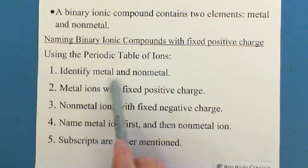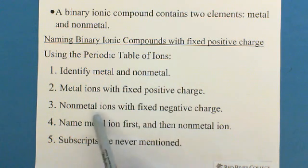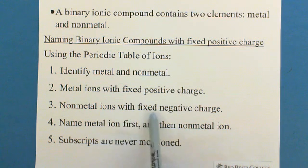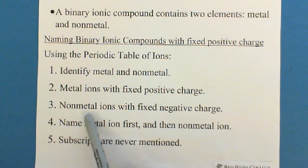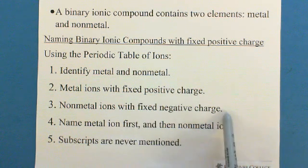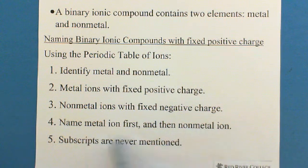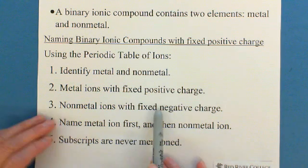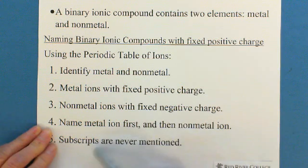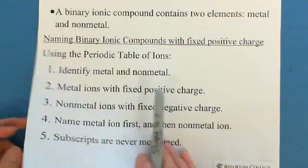So first identify metal and nonmetal. And also identify metal ions with fixed positive charge. And nonmetal, nonmetal ions with fixed negative charge. Mostly, in this case, as long as ionic compound, the nonmetal is fixed negative charge. So for naming them, just name metal ion first. And then naming nonmetal ion. And subscripts are never mentioned. The reason is because metal has fixed charge. So the subscripts are always fixed.